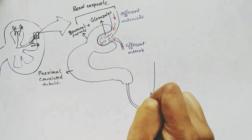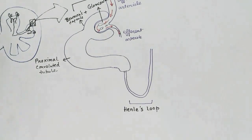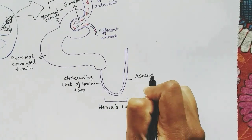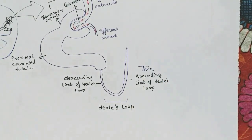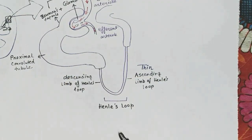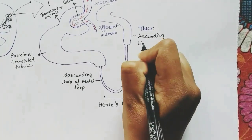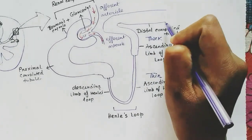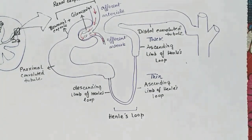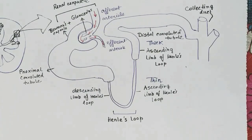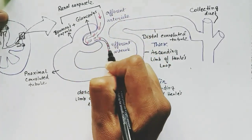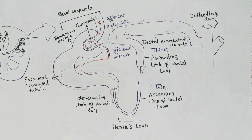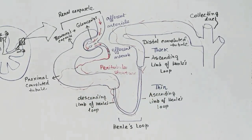After the head of the nephron, this is the proximal convoluted tubule. Next, the U-shaped structure is Henle's loop — this is the descending limb and this is the ascending limb, which has two parts: thin and thick. The thick ascending loop connects to the distal convoluted tubule, which connects to the collecting duct shared by other nephrons. The efferent arteriole gives rise to fine blood capillaries surrounding the whole nephron for reabsorption and secretion — this is called the peritubular structure.